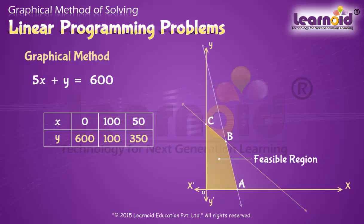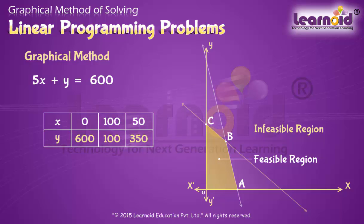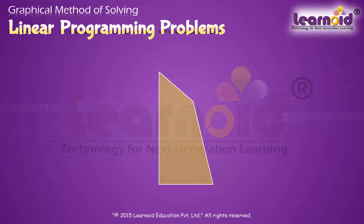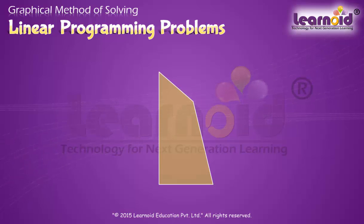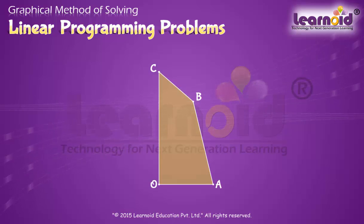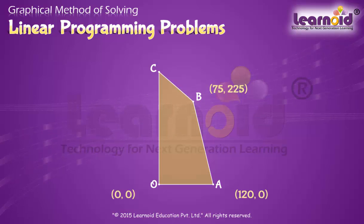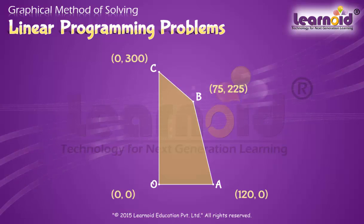The region outside the feasible region is called an infeasible region. Points within and on the boundary of the feasible region represent feasible solutions. Every point within and on the boundary of feasible region O, A, B, C represents a feasible solution of Ramesh's problem. The corner points (0, 0), (120, 0), (75, 225), and (0, 300) are also feasible solutions of the problem.